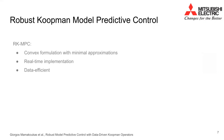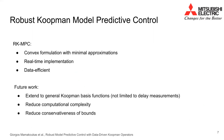In summary, the proposed RK-MPC algorithm is a convex formulation with minimal approximations to the original optimization problem. It is also real-time implementable, even in Python, and data efficient, showing that it can safely control the Duffing oscillator and the quadrotor with significantly less data than competing robust MPC methods. Ideas for future work include extending our work and analysis to general Koopman basis functions and further reducing the computational complexity and conservativeness of the prediction bounds. Thank you for listening.